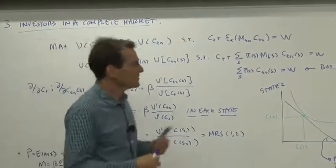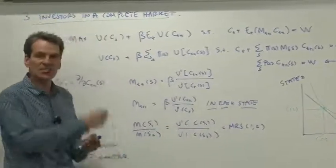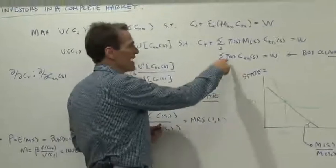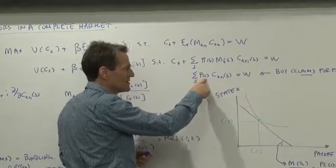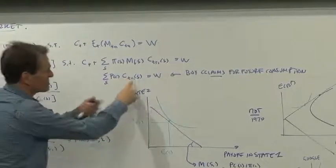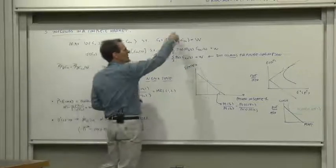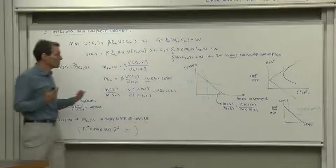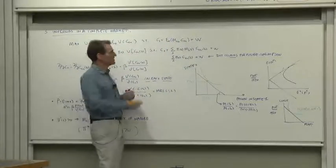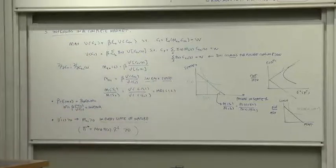Well, in a complete market, what the consumer does is goes out today and buys contingent claims to future consumption in every state tomorrow. So he has to go out and buy contingent claims for rain, how much he wants to eat if it's rain, contingent claim for shine, how much he wants to eat if it shines, and so on. So the meaning of expected discounted consumption in a complete market is the contingent claim value, buying enough today, and then you just exercise those contingent claims tomorrow.